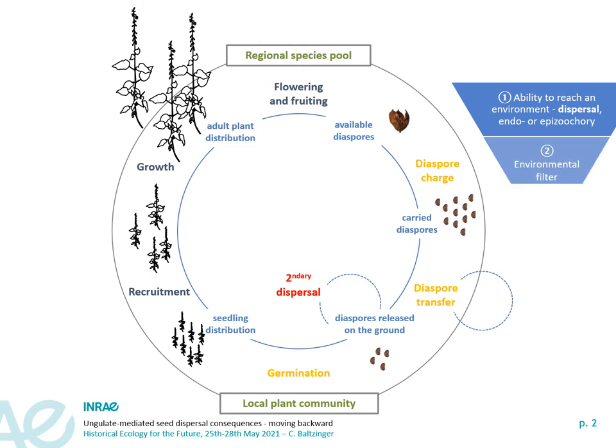Then you have the environmental filter, which corresponds to the abiotic conditions at the releasing site. This can also be modified by ungulates through soil disturbance or nutrient deposition. And finally, you have the biotic context, which includes interactions between plants, selective herbivory, secondary dispersal by dung beetles, and predation of seeds by rodents or fungi developing on the feces released by ungulates.